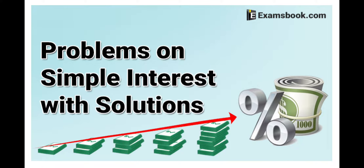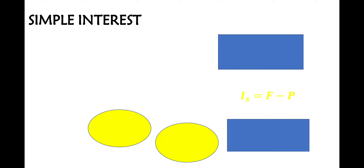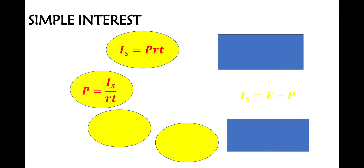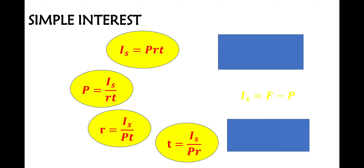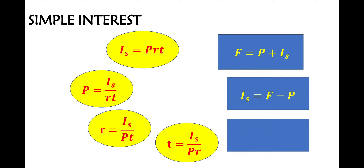We're going to solve problems involving simple and compound interest with solutions. In solving problems on simple interest, we're going to apply the formulas we already discussed in our previous lesson: if simple interest is unknown, if principal is unknown, if rate is unknown, and if time is unknown. Also, if future value is unknown, if simple interest is unknown, and if future value and principal are given, and if principal is unknown and future value and simple interest are given.